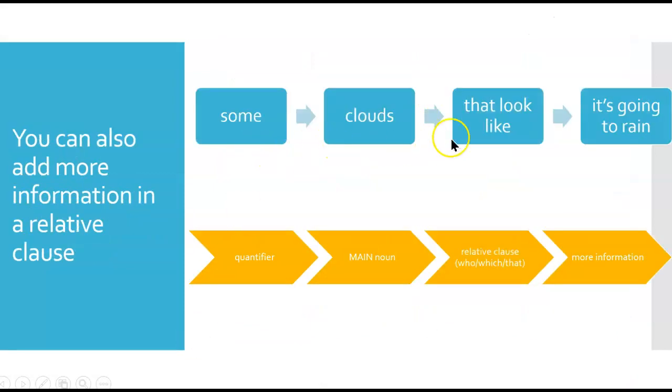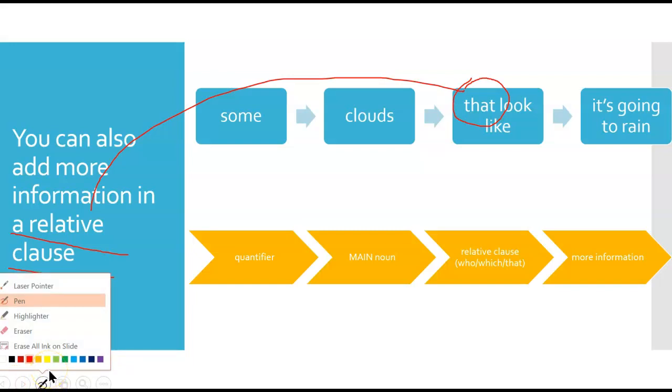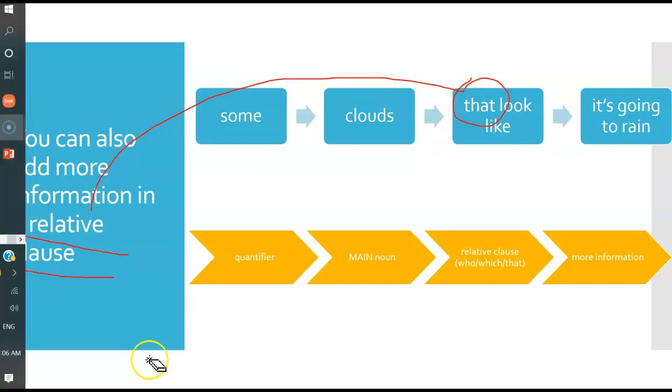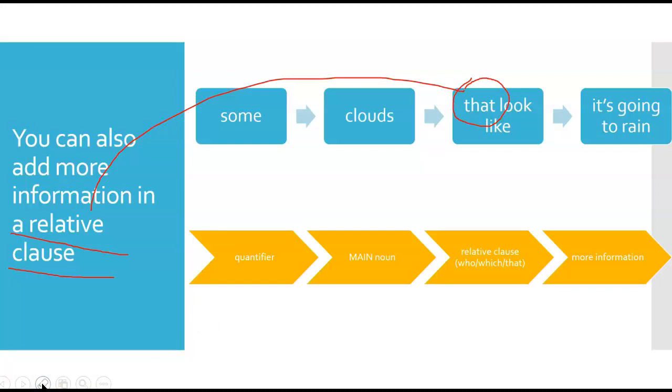The last one was some clouds that look like it's going to rain. And you can see here, this word 'that' is a relative pronoun starting a relative clause. So this is to add more information. Some clouds that look like it's going to rain. So we have a quantifier, then the main noun is clouds, and then who, which, or that, and more information.